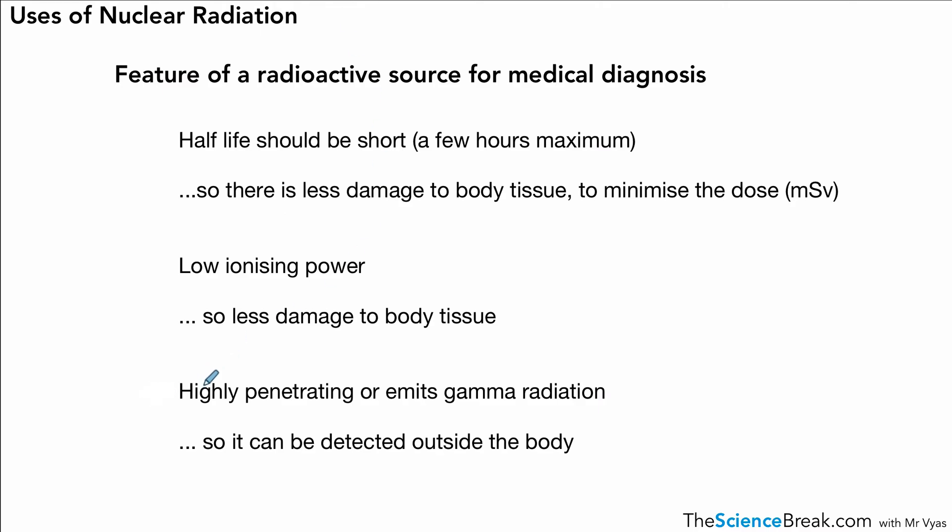The third and final one is having higher penetrating power - or we could say it's gamma radiation - so that it can either be detected outside of the body if we're using it for diagnosis, or if it was being used for treatment it could penetrate into the body to get to the tissue it's trying to treat, such as cancer cells or tumor cells.